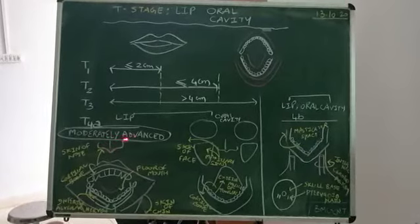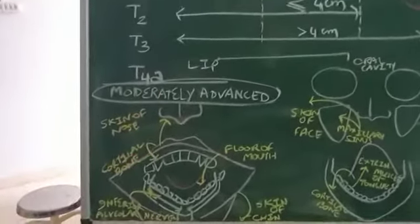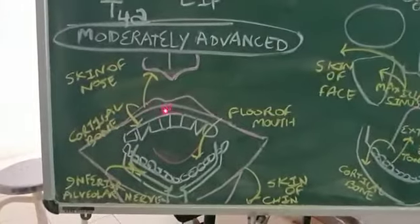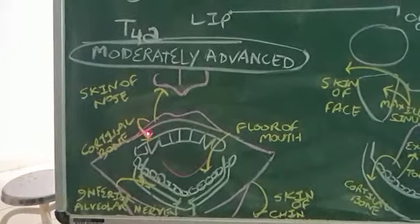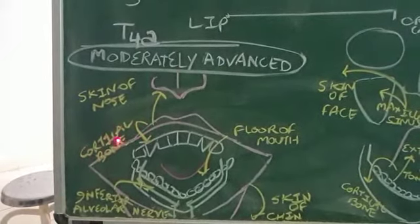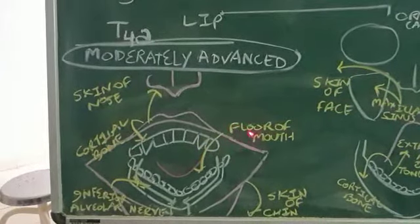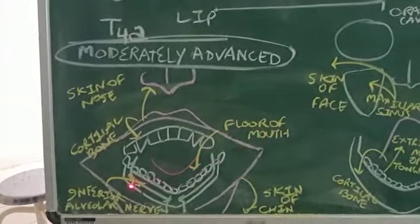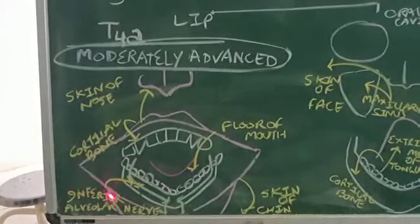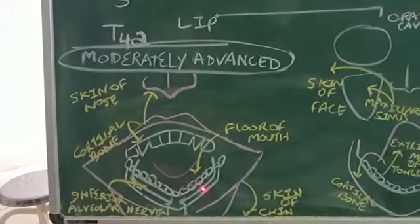So once we try to take moderately advanced T4A in lip cancers. So lip is there here, this is the lip. From there, it is extending into a bone, cortical bone. Number 1, cortical bone. From there, it is extending into the floor of the mouth. Number 2 is floor of the mouth. From there, it is extending into the inferior alveolar nerve, which is there in the mandible. Inferior alveolar nerve.